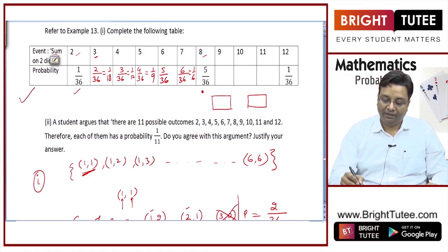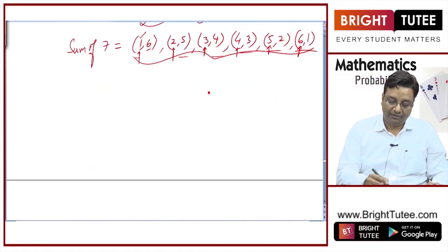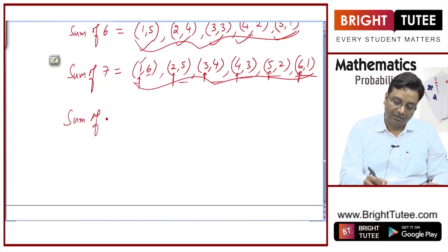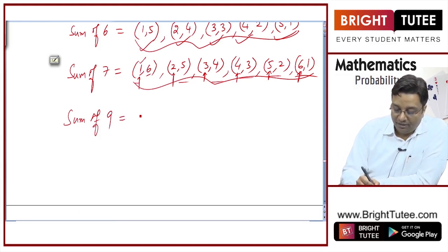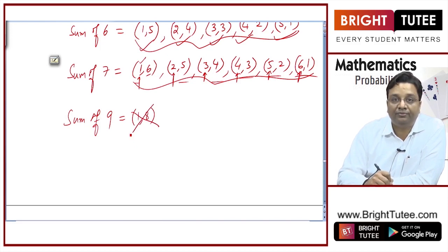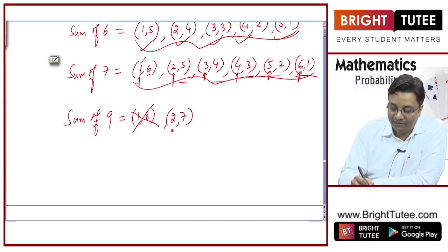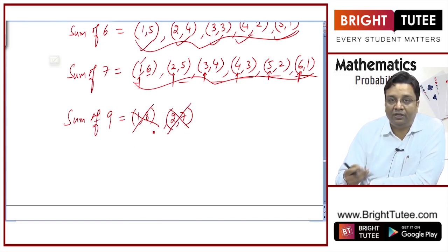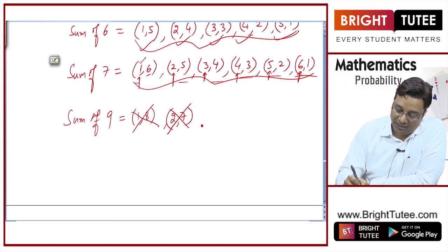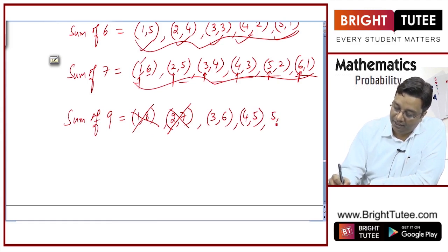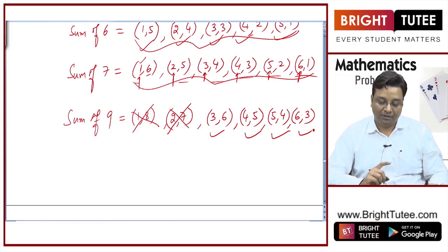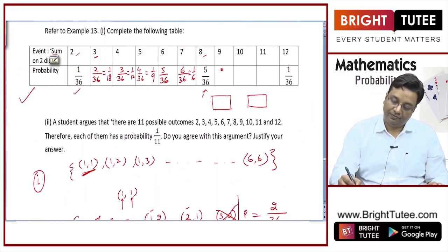Sum of 8 is already given as 5/36. For a sum of 9: starting with 1 on the first die, we cannot have 8 on the second; starting with 2, we cannot have 7. So we start with 3 on the first die: 3 and 6, then 4 and 5, 5 and 4, 6 and 3. These 4 cases are the favorable outcomes, so the probability is 4/36, or 1/9.